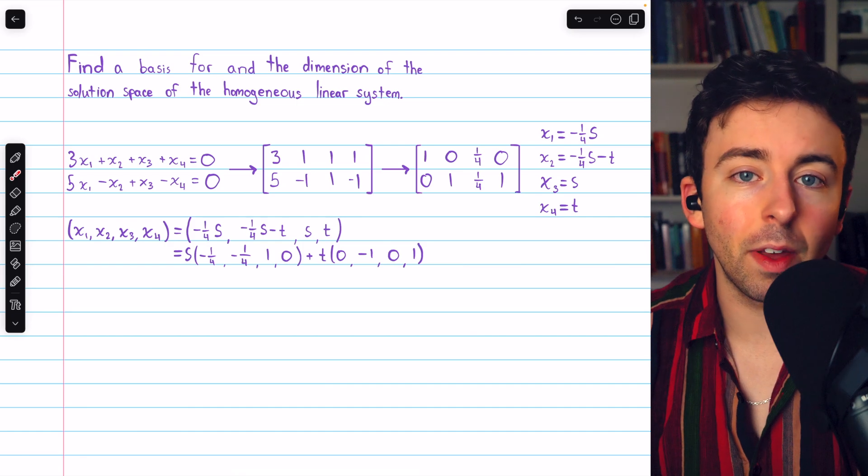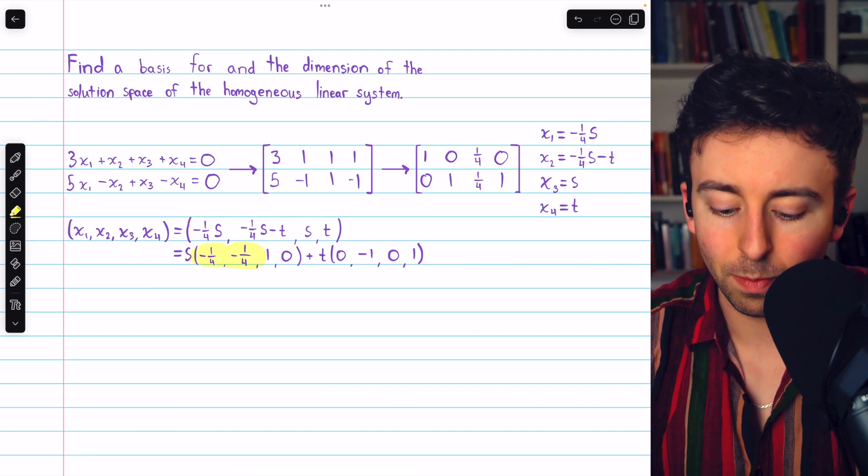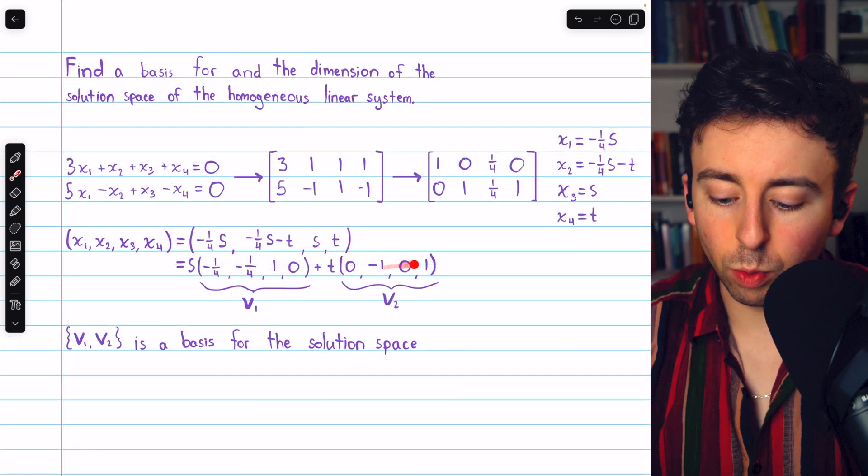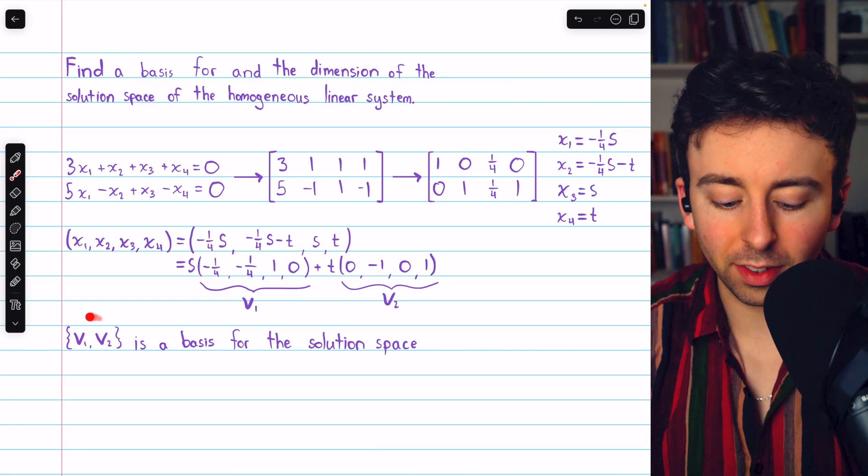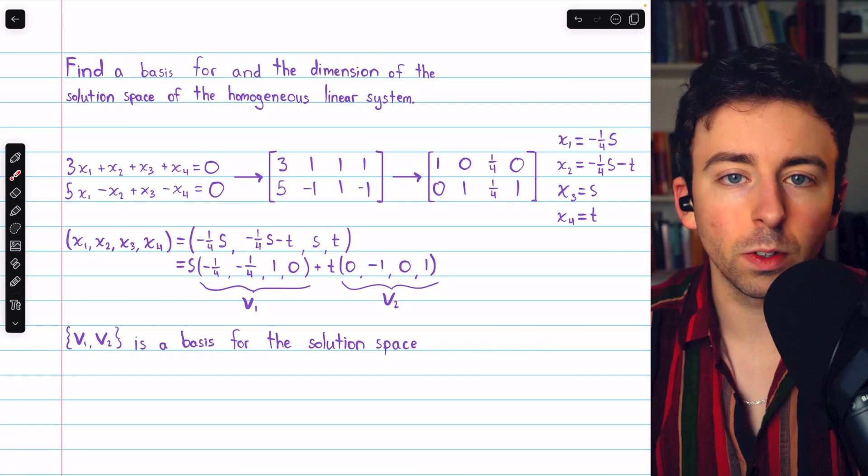Thus, we have a basis for the solution space. The basis contains this vector and this vector. Let's say we call this vector v1, and this one we'll call v2. So, we're saying this set of those two vectors is a basis for the solution space.